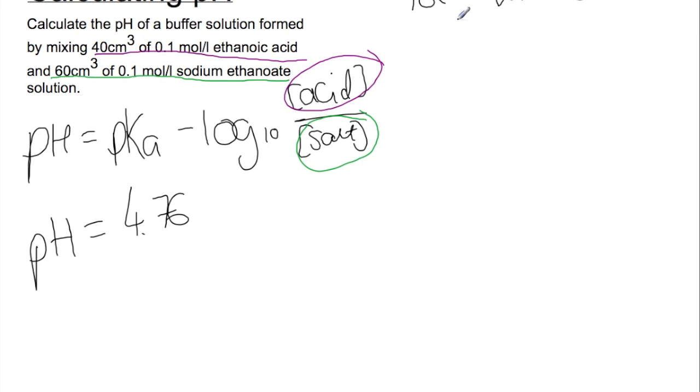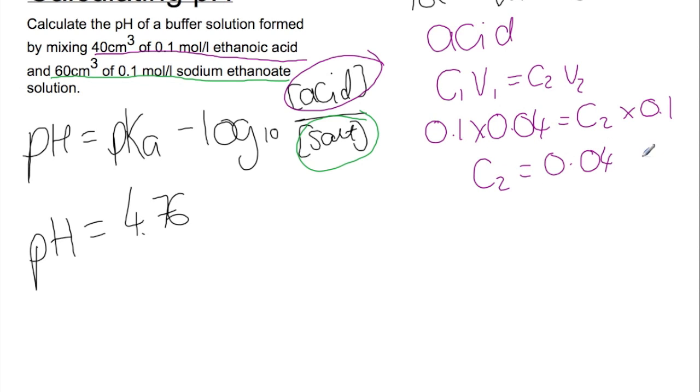Looking at the acid first, we're going to use the equation C1V1 equals C2V2 to work out our concentration. So initially we have 0.1 mol per litre and we have 40 cm³ which is 0.04. We're trying to work out the new concentration and the total volume will be 0.1. That means that our concentration of acid is 0.04 mol per litre.